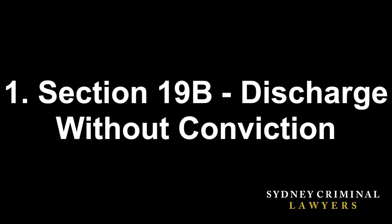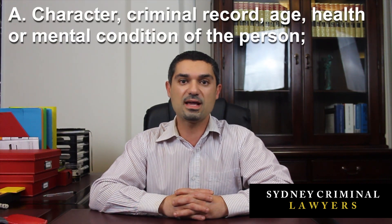The first is called a section 19B Discharge. What that means is that you're guilty of an offence under the Commonwealth legislation, but the judge or the magistrate does not impose a criminal conviction against you. So it's the best result for an offence under the Commonwealth legislation if you are pleading guilty. The things that a magistrate or judge will consider when deciding whether or not to exercise their discretion to give you a section 19B Dismissal or Discharge are your character,